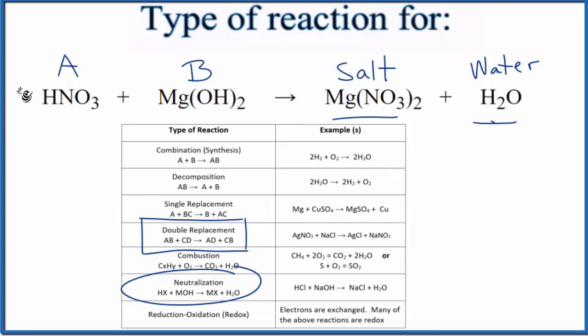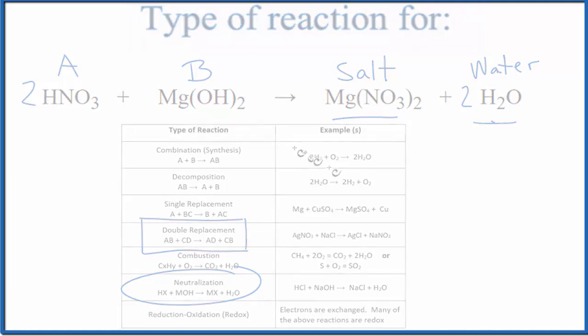Let's balance this so it makes a little more sense, though. If we put a 2 here and a 2 here, then that would be all balanced out. So this reaction here can be classified as two different types: double replacement and neutralization. This is Dr. B with the type of reaction for HNO3 plus Mg(OH)2. Thanks for watching.